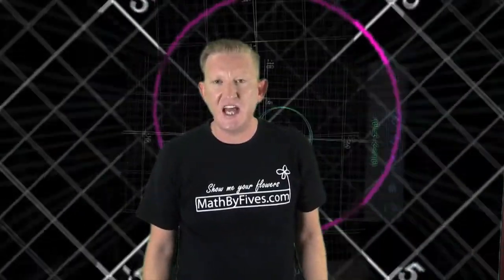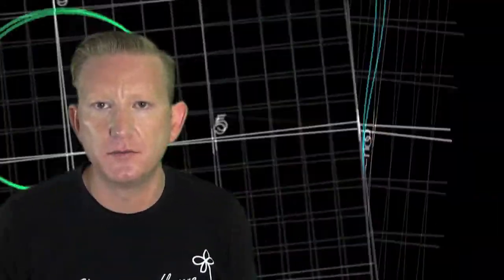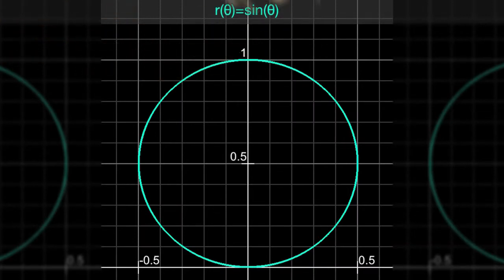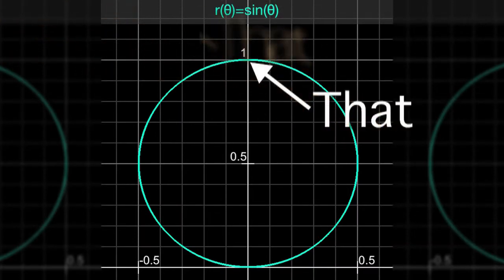I feel like there's cardioids everywhere, how do we tell them apart? r equals sine theta - that's a circle on the y-axis because sine represents y. When sine of pi over two equals one, that's why it's out there, and it goes around twice.